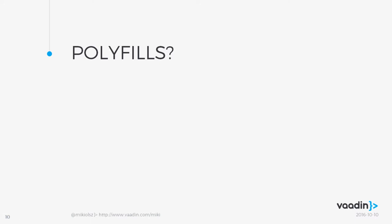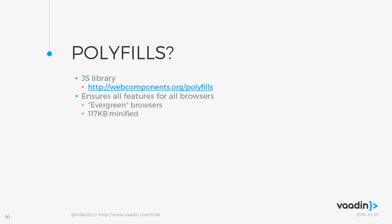Polyfills is a JavaScript library. All browsers have a JavaScript interpreter and can run JavaScript, so we use JavaScript to fill the missing gaps. This gives all the required features — HTML templates, Shadow DOM, custom elements, and HTML imports — to all evergreen browsers. The disadvantage is extra 117 kilobytes your page has to load, which can be problematic for performance. What's good is that polyfills detect what is supported by the browser, and as implementations become common across browsers, the size of polyfills will decrease over time.